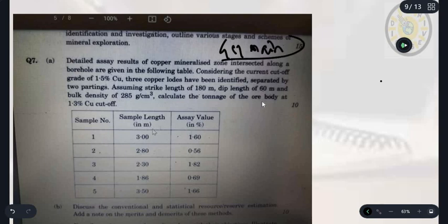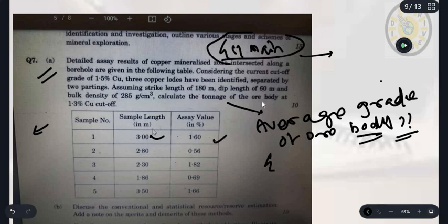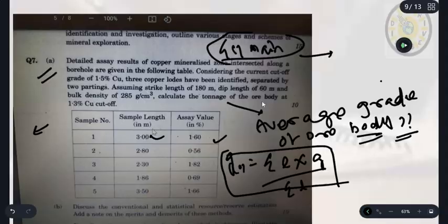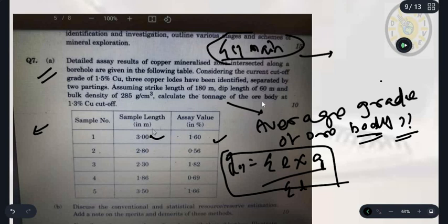Let's discuss this question. Suppose the question asks to calculate the average grade of ore body. There are five number of trenching samples where samples get collected. Sample length is given and grade is given. You know the formula: summation of length into grade upon summation of the length. This formula has been applied here - summation of L1 g1 plus L2 g2 plus L5 g5 because five number of samples are there.